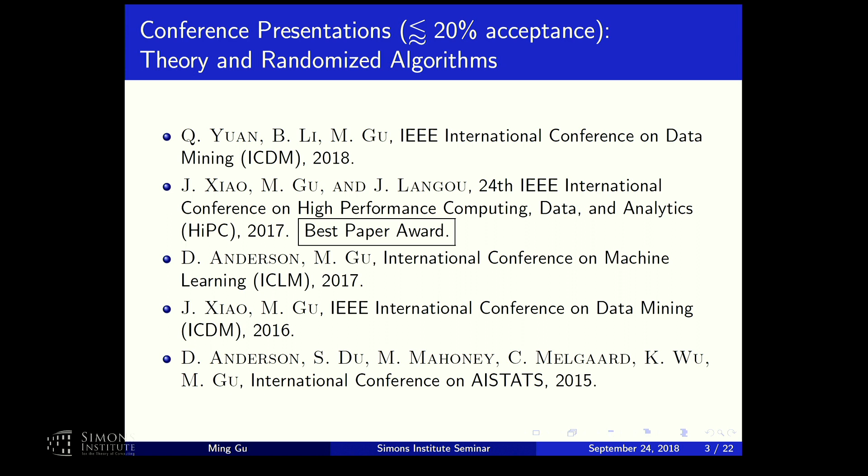So over the past few years, we have been submitting these papers. And we got so far five acceptances at these top machine learning conferences. Typically, the acceptance rate is less than 20%. And one of the papers was awarded this best paper award. This was like in 2017, I think.